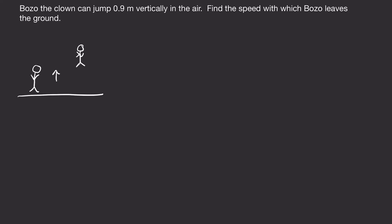So I'll draw Bozo the Clown, just as a person, jumping 0.9 meters in the air. And one thing that we know from kinematics is that at the very top, the velocity is going to be zero.